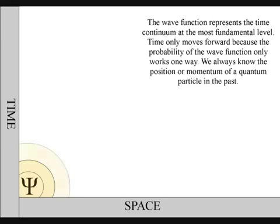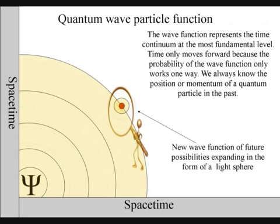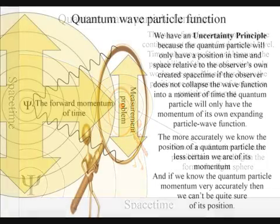When each wavefront comes in contact with another atom, we will have a moment in time, creating a new wave function of future possibilities. This radiant energy creates the probability of the uncertainty principle in quantum physics.